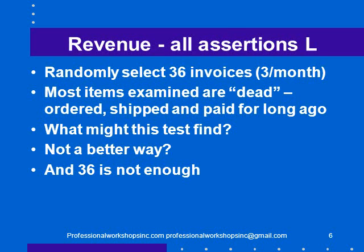For instance, revenues — we've assessed all assertions as low risk of material misstatement and our approach is to select 36 invoices, three a month. That's kind of a standard thing we do all the time. But really, most of the items we're examining are dead — they were ordered, shipped, and paid for a long time ago. What might this test really find? We're just going to be agreeing something to something it already agrees to. And if we do decide we need to look at 36 invoices, I would assert that 36 is not enough. 3,600 might not even be enough for a large client if you really want to come to a statistical conclusion about a large population like revenues — maybe it's 36,000. But 36 is probably not enough, and particularly if the system is computerized, where the computer performs every transaction the same way, 36 is too many or not enough.